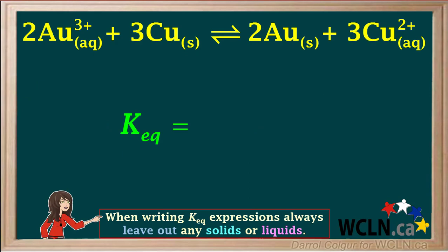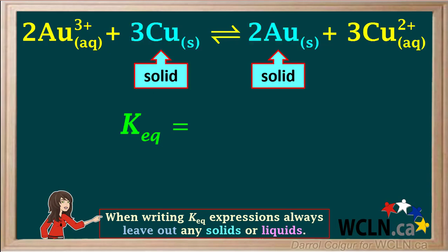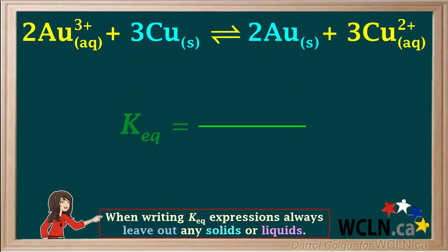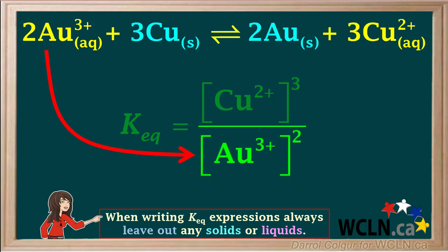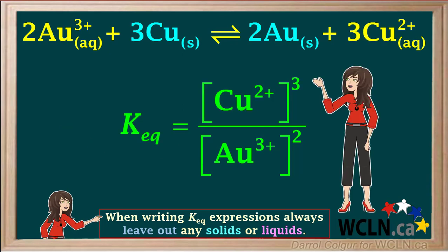Pause the video and try writing the Keq expression for this reaction, then resume to check your answer. Notice that copper metal and gold metal are both solids in this equation. Therefore, we simply leave the concentrations of both of these out of the Keq expression. The numerator is the concentration of the product Cu²⁺ cubed, and the denominator is the concentration of the reactant Au³⁺ squared. Because the copper metal and gold metal were both solids, they are simply left out of the Keq expression.